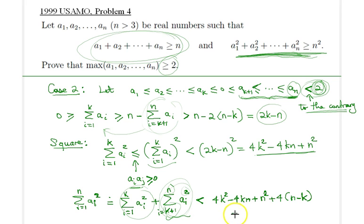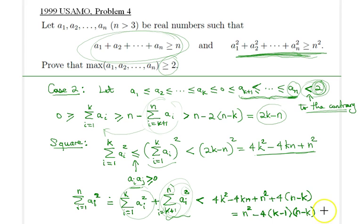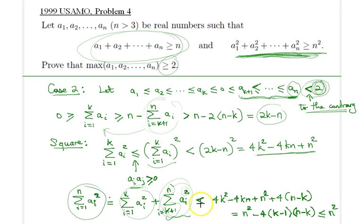That whole right-hand side is equal to n² minus 4(k − 1)(n − k), which is less than or equal to n². This is clearly a contradiction, because we want to show that Σ aᵢ² ≥ n², but it turns out to be strictly less than n². Therefore we have solved this problem and we are done with our proof. Hope to see you in the next video.